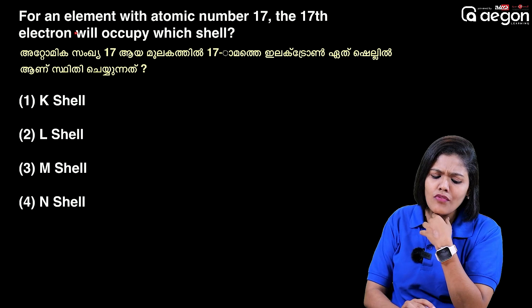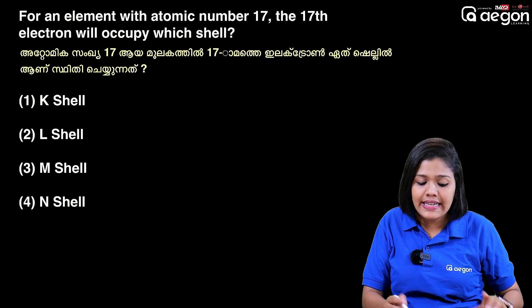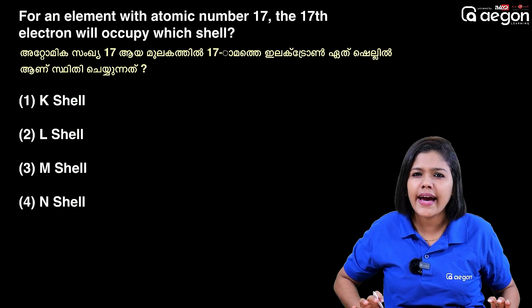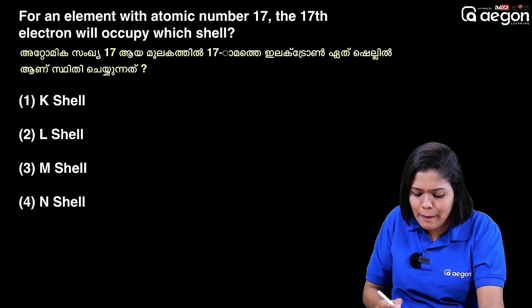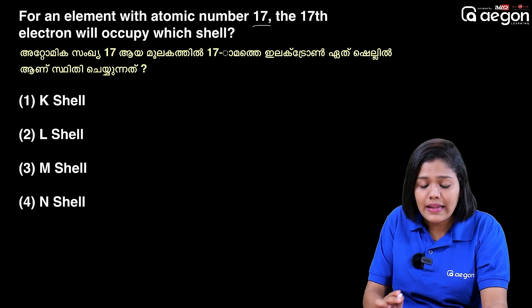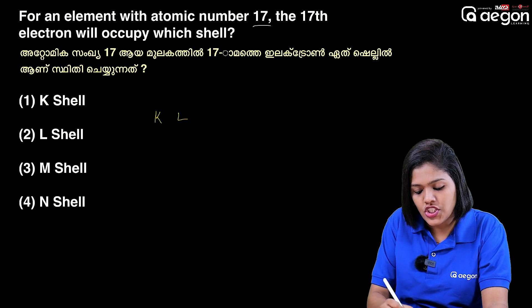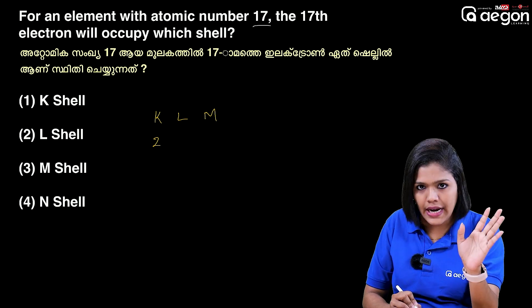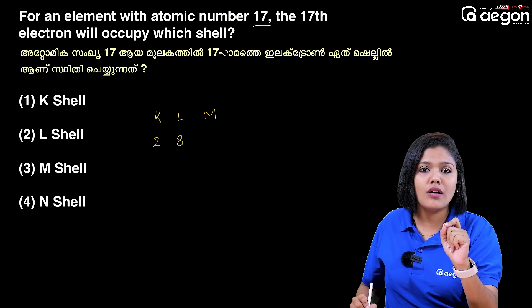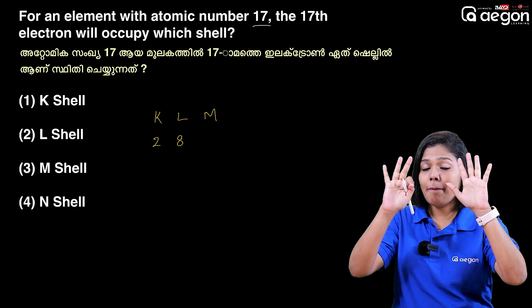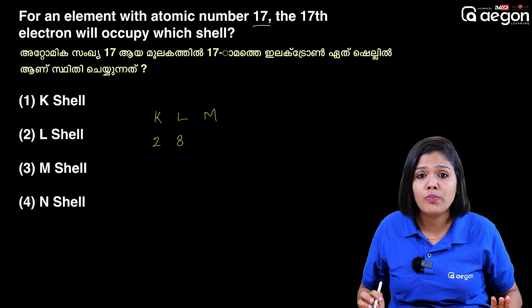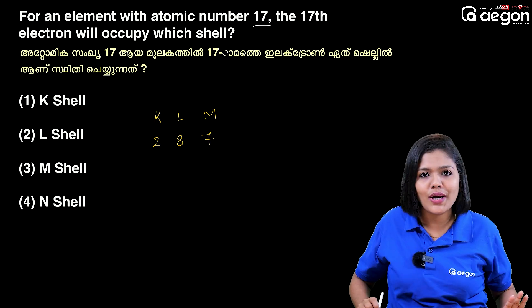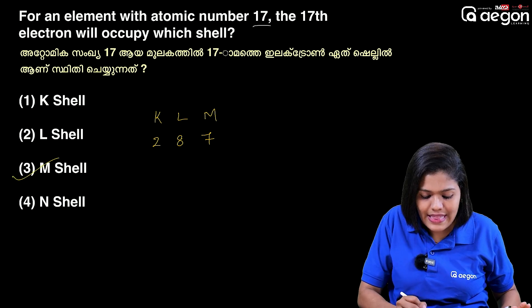Next question: For an element with atomic number 17, the 17th electron will occupy which shell? This is tricky. Atomic number 17. We have K shell, L shell, M shell. K shell has 2 electrons, L shell has 8 electrons, then we have 7 more electrons in M shell. So the 17th electron occupies the M shell.